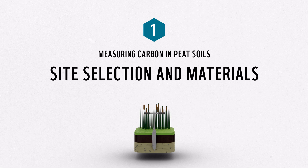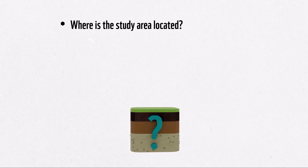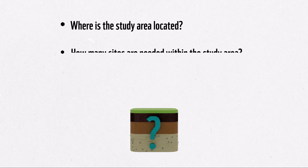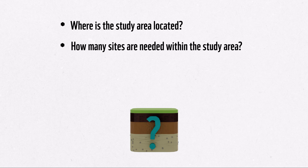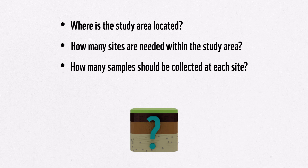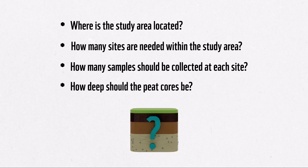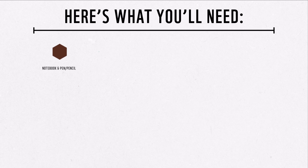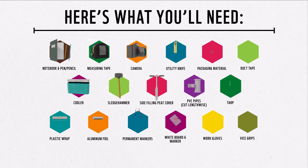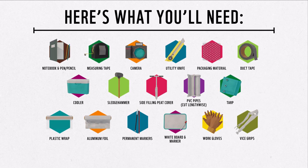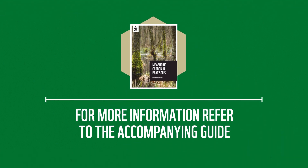The first step of measuring carbon in peat soils is to think about your site selection and sampling logistics. Consider the following questions: Where is the study area located? How many sites are needed within the study area? How many samples should be collected at each site? How deep should the peat cores be? Once you've selected your site, you will need the following materials to obtain a peat core using the methods described in this video. A detailed equipment list can be found in the accompanying guide.